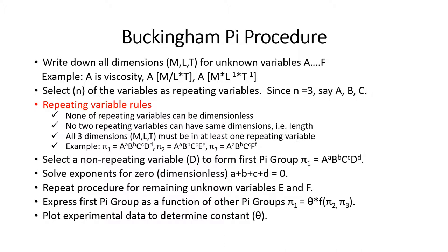The rules for selecting repeating variables: none of them can be dimensionless — so specific gravity or a pipe roughness factor cannot be repeating variables because they lack the dimensions of mass, length, or time. No two repeating variables can share the same dimensions — so you couldn't pick both pipe diameter and pipe length since both have dimension of length. And all three dimensions — mass, length, time — must be represented across at least one repeating variable each.